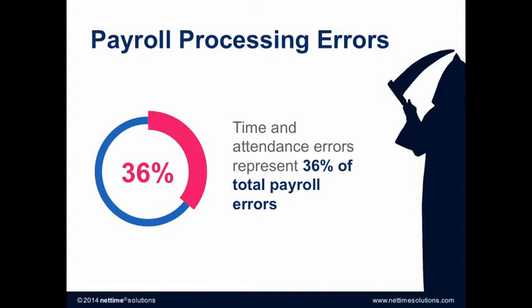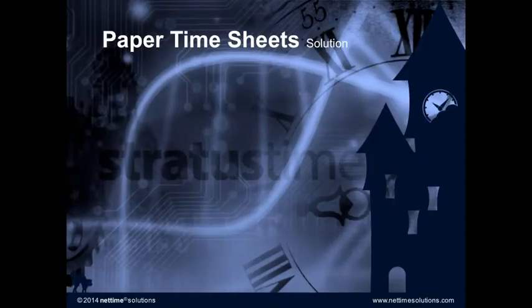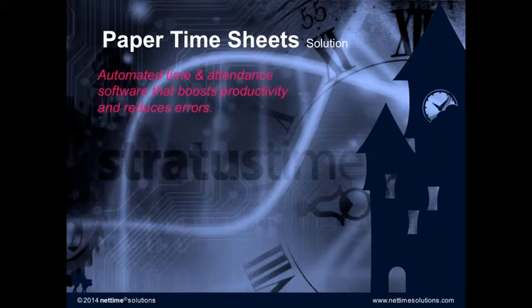Time and attendance errors represent 36% of total payroll errors — the result of fraudulent time clock usage like buddy punching, manual miscalculations caused by human error, or general inconsistencies among managers. Studies show that by automating time and attendance, companies decrease their time tracking error rates by 32%. And organizations that integrate their automated time and attendance with payroll see a 63% decrease in their payroll processing error rate. We recommend an automated time and attendance software platform that boosts productivity and reduces errors.